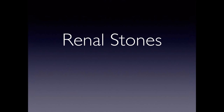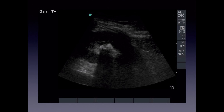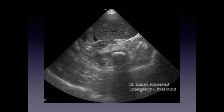Renal stones can be seen in the kidney on ultrasound. We usually cannot follow the ureter all the way down to visualize stones there, except in the proximal ureter or the very distal ureter adjacent to the bladder. Renal stones appear hyperechoic with a posterior clean shadow — well-demarcated — as opposed to the dirty shadow seen with bowel. This is because calcium or bone does not conduct ultrasound waves, causing complete blockage and a clean shadow behind.